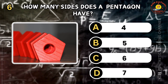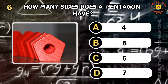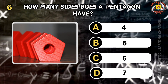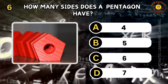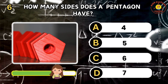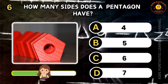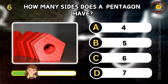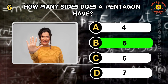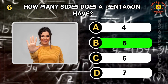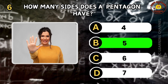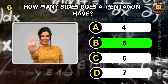Question 6. How many sides does a pentagon have? A: 4, B: 5, C: 6, D: 7. Excellent choice! The correct answer is B. A pentagon has five sides.